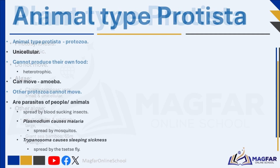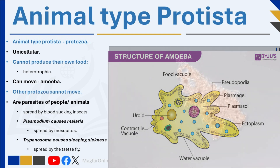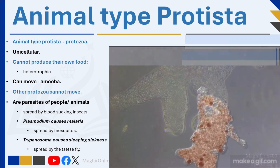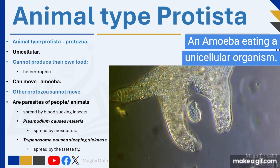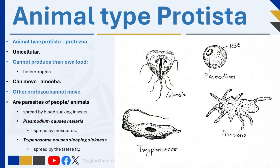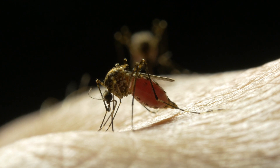Animal-type protista are also called protozoa. Unlike animals, all protozoa are unicellular organisms. They cannot produce their own food and depend on other organisms — they are heterotrophic. They have a special way of moving from one place to another, for example the amoeba. One group of protozoa have no way of moving on their own; these organisms are parasites of people and animals spread by blood-sucking insects. The parasite Plasmodium, which causes malaria, is an example and is spread by mosquitoes.